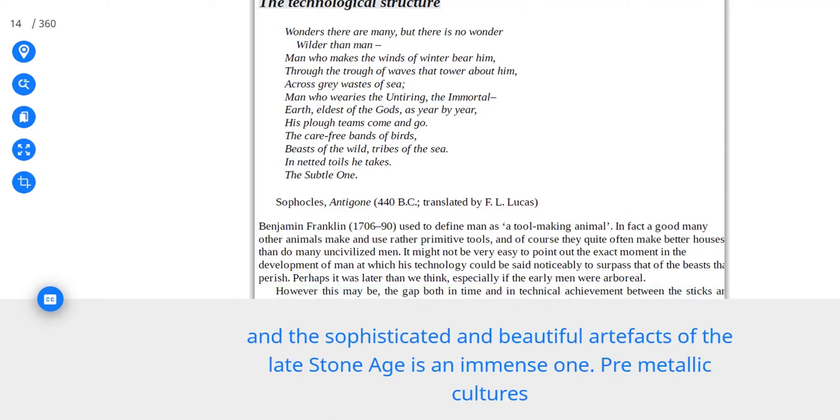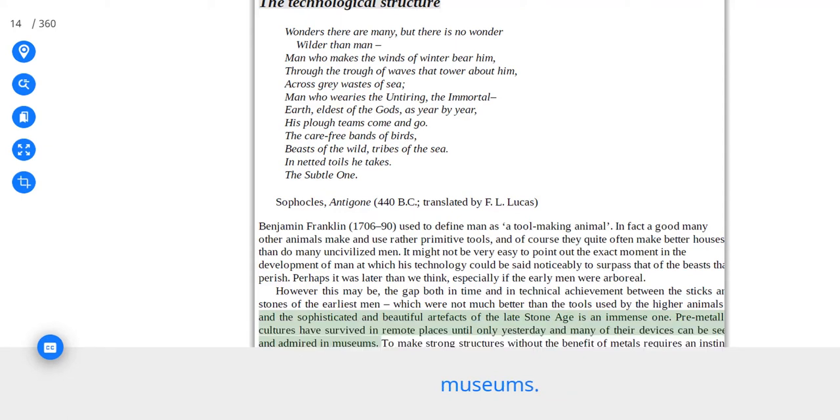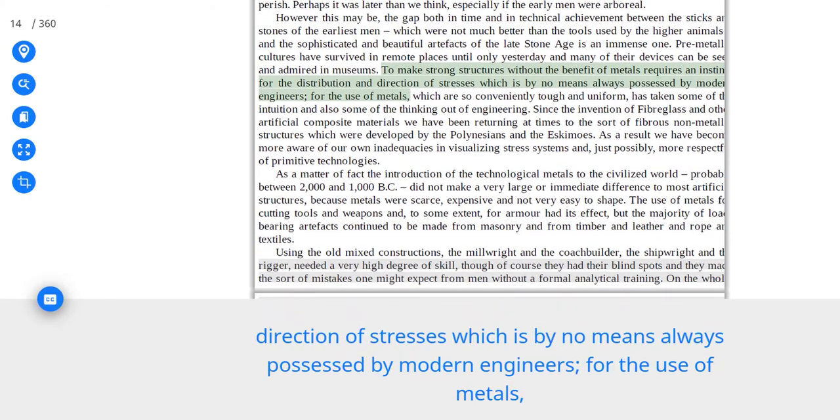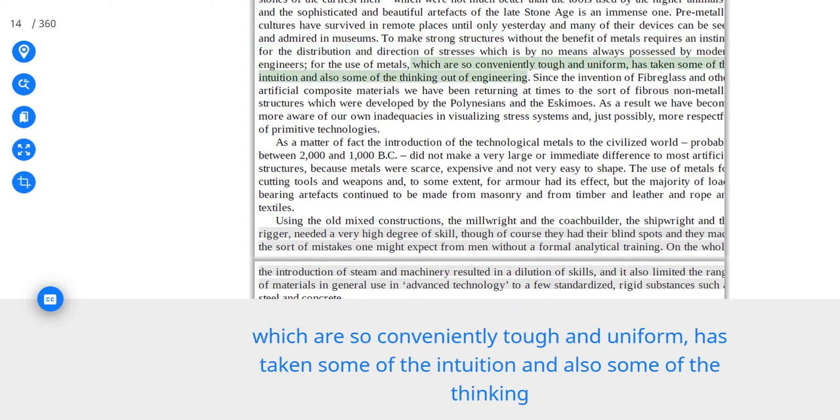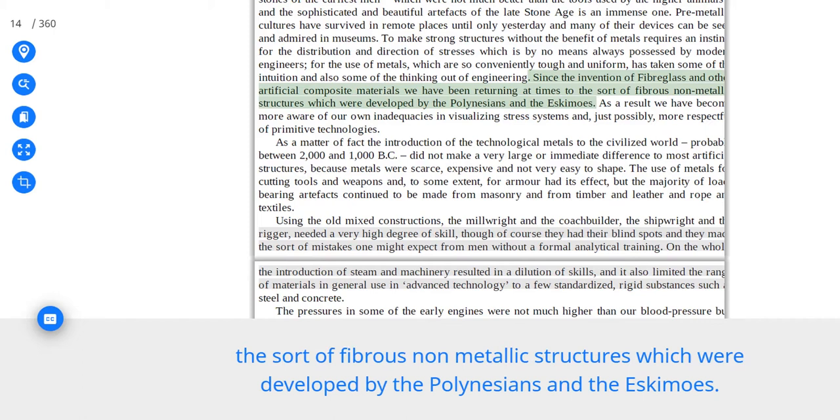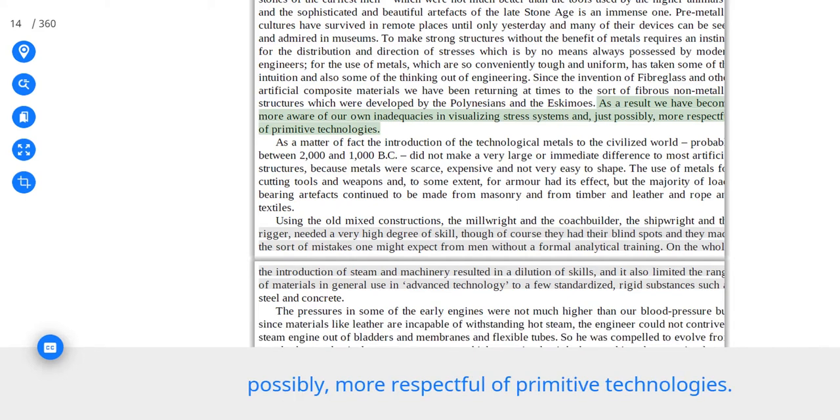However this may be, the gap both in time and in technical achievement between the sticks and stones of the earliest men, which were not much better than the tools used by the higher animals, and the sophisticated and beautiful artifacts of the late stone age is an immense one. Pre-metallic cultures have survived in remote places until only yesterday and many of their devices can be seen and admired in museums. To make strong structures without the benefit of metals requires an instinct for the distribution and direction of stresses which is by no means always possessed by modern engineers, for the use of metals, which are so conveniently tough and uniform, has taken some of the intuition and also some of the thinking out of engineering.